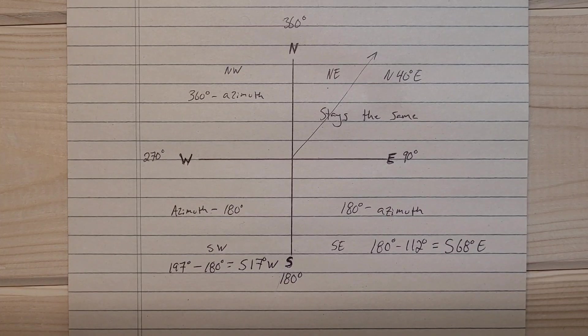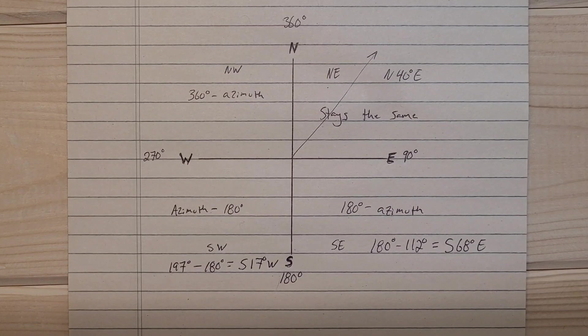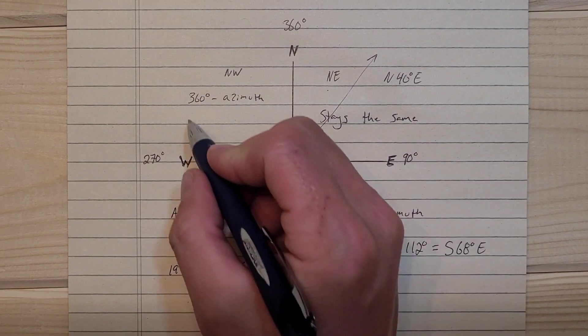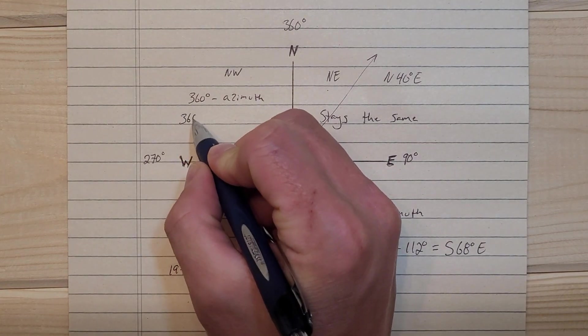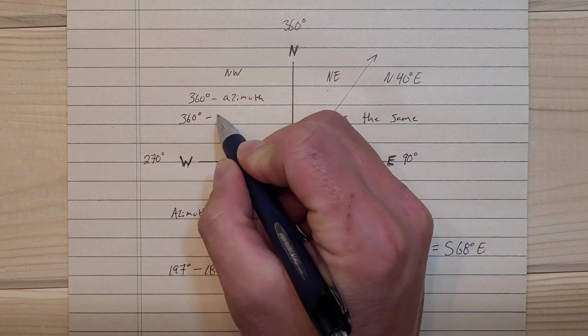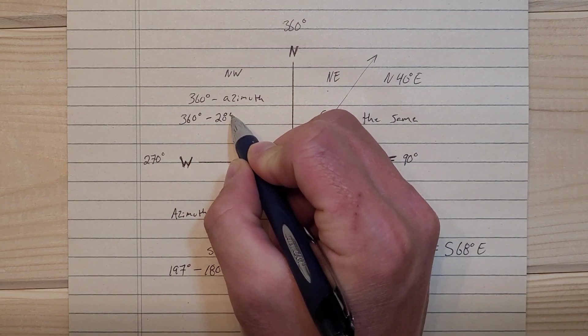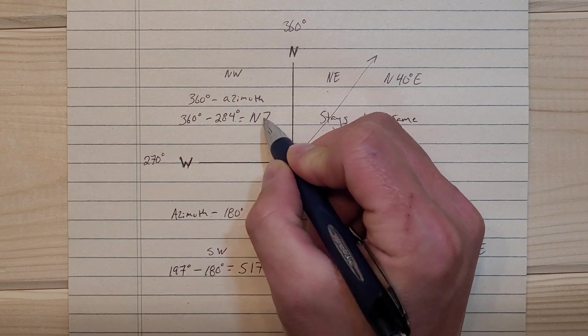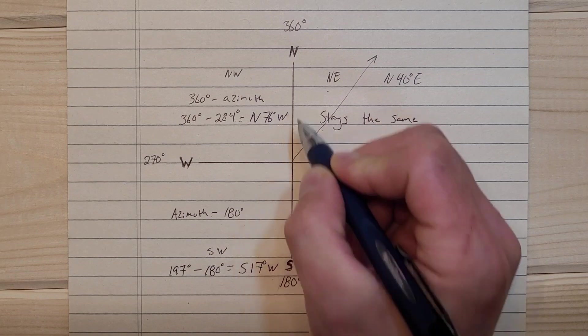And say you're given an azimuth of 284 degrees. That falls within this quadrant here, so you do 360 degrees minus 284 degrees, and that equals north 76 degrees west.